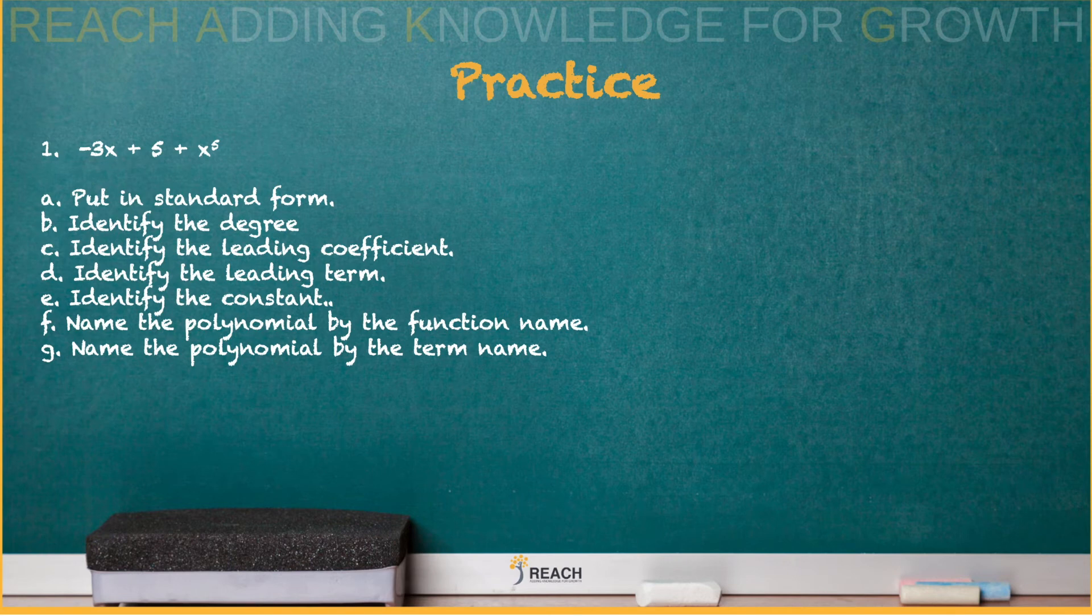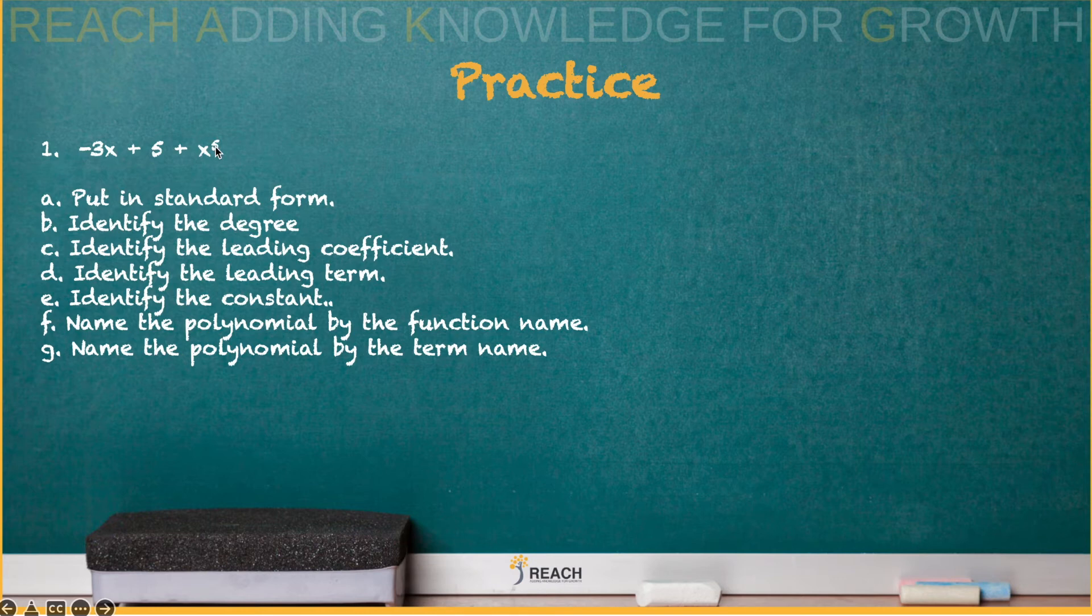Put it in standard form, which means the highest exponent. I see the highest exponent would be right here, five. And what's the invisible exponent? One. And then this is your constant. So our standard form. What's the degree? Degree means the highest exponent, which is five. Identify the leading coefficient. What is the number in the very front? Now you remember, that's an invisible number.